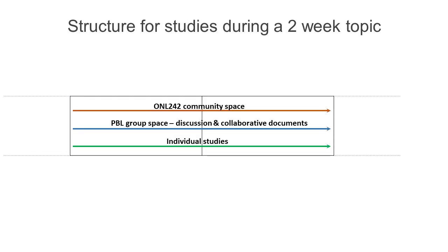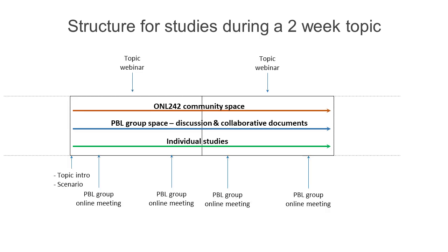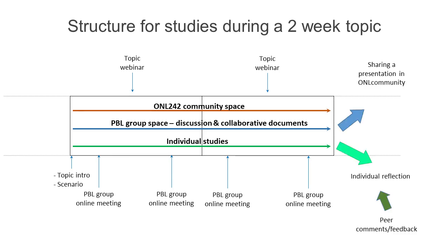A two-week topic is structured in the following way and will happen in the three mentioned spaces. At the beginning of the topic, a scenario will be introduced and you have some reference literature and course material to get you started. You then get together in your first PBL group meeting and discuss what you would like to focus on. You will also have a topic webinar for additional input and usually two group meetings per week. In the second week there might be another common course activity, and at the end of the topic you will present and share your outcomes to the entire ONL community. You will also reflect individually on your learning, on the group process, and give feedback to others on their individual reflection and group work — all in order to create a community of learners and network learning.